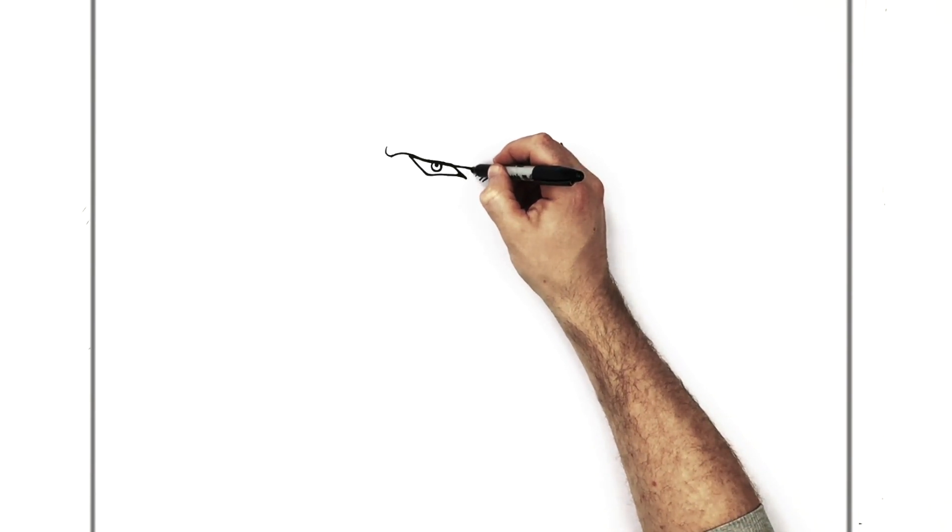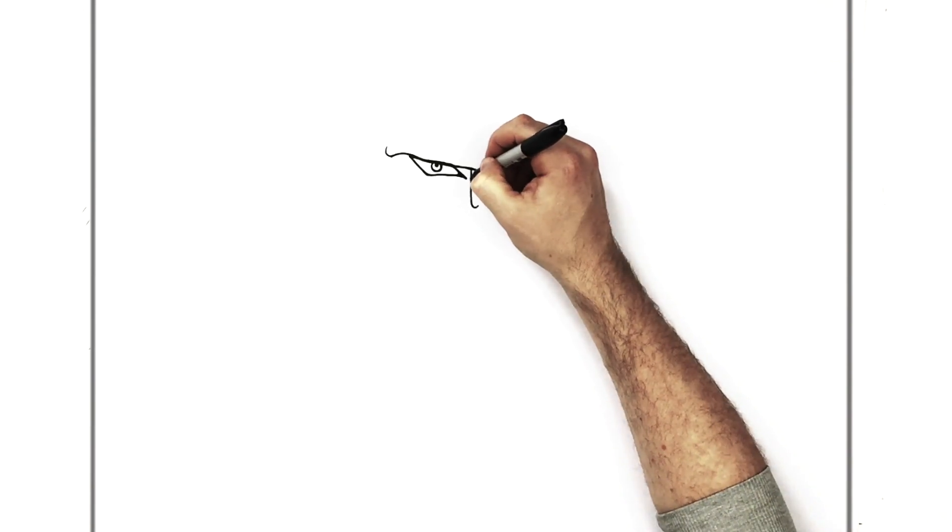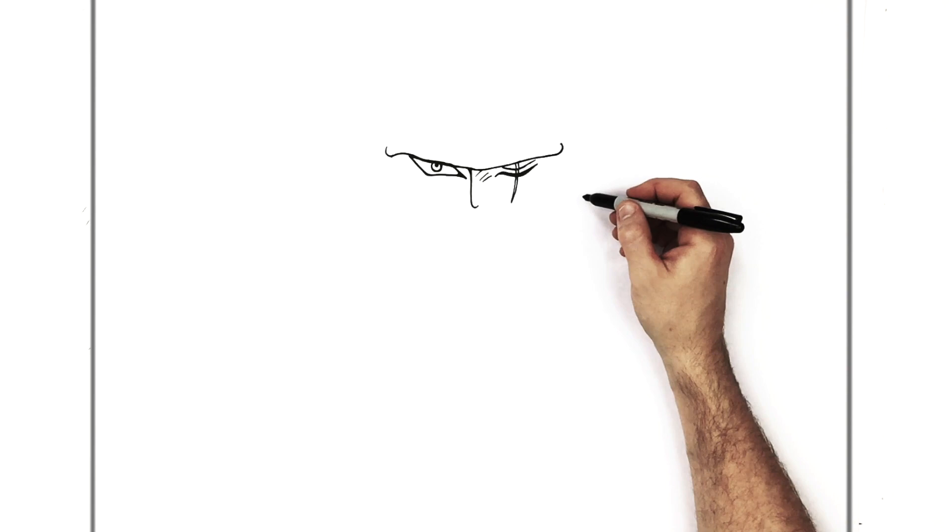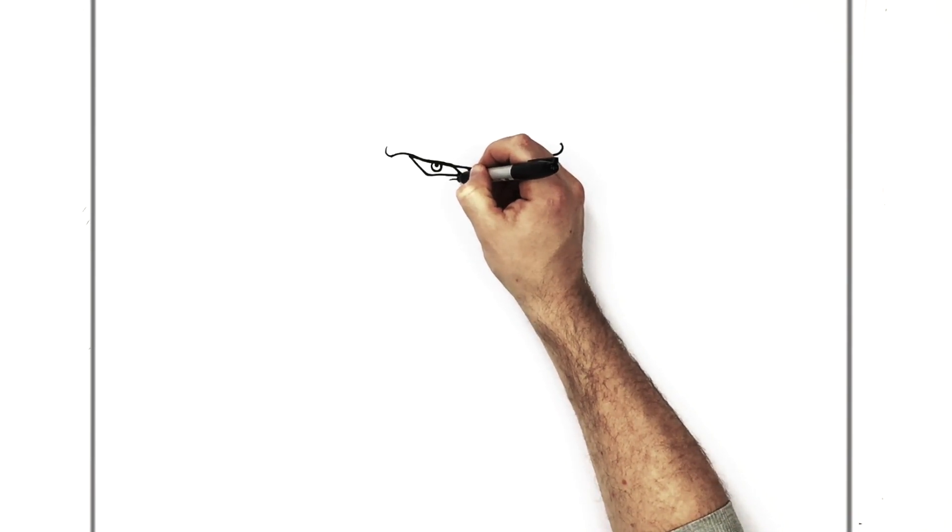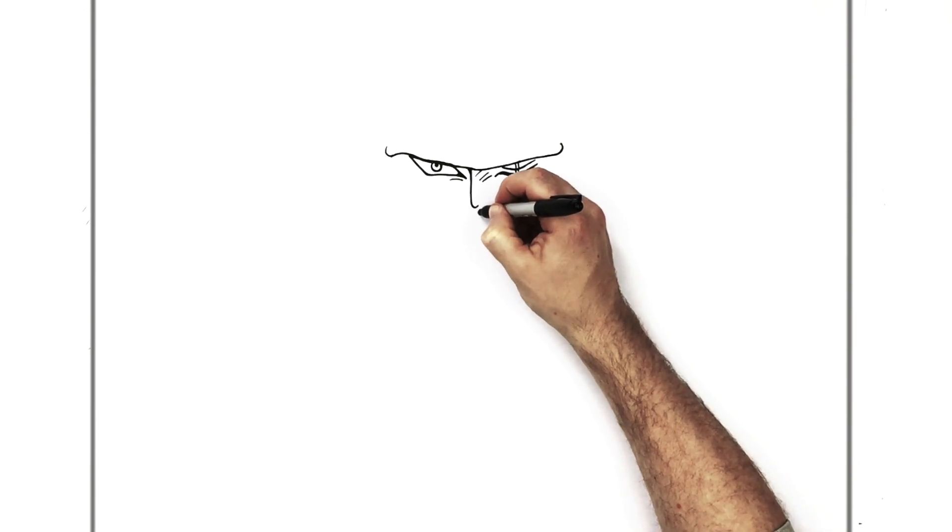Then his nose, so we got a line just coming down here, kind of hooks around the bottom, curves up that way a little bit. He has just a line underneath his eye there, and then nostrils just down here.